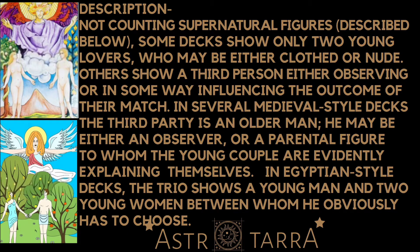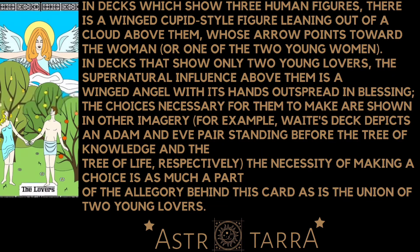In Egyptian-style decks, the trio shows a young man and two young women between whom he obviously has to choose. In decks which show three human figures, there is a winged Cupid-style figure leaning out of a cloud above them, whose arrow points toward the woman or one of the two young women. In decks that show only two young lovers, the supernatural figure above them is a winged angel with its hands outspread in blessing.